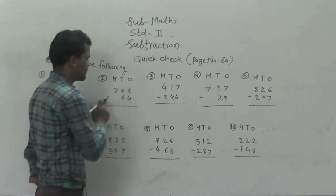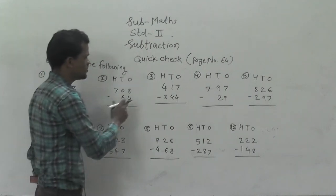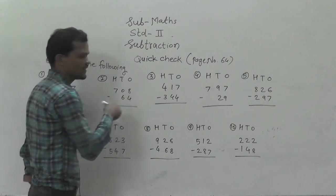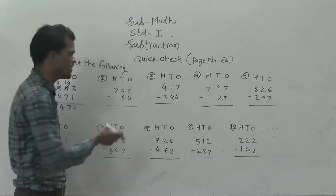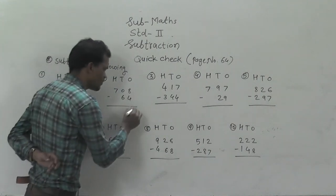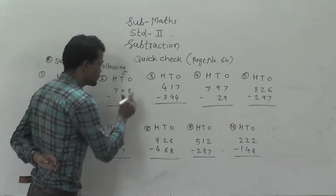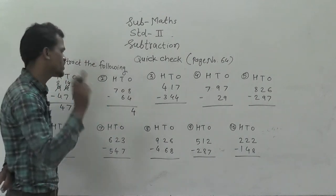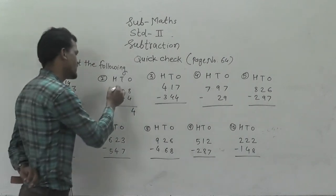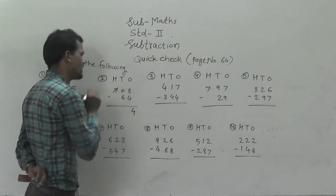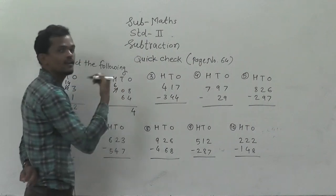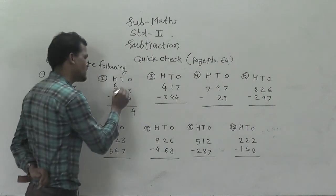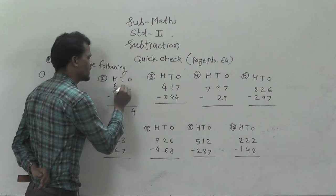Next: 708 minus 64. Here 8 minus 4 is possible, so 8 minus 4 is 4. Then 0 minus 6 — not possible. So regroup this 700 into 6 hundreds and 10 tens. That 10 tens come here.